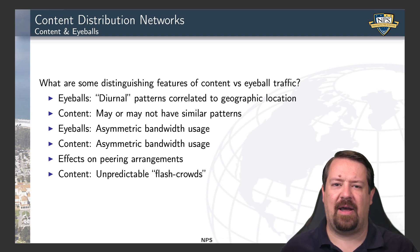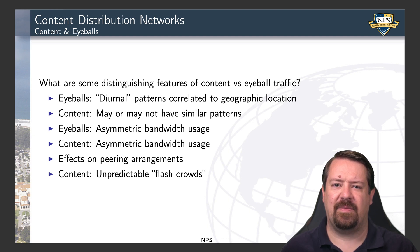For example, eyeball networks tend to have diurnal patterns, meaning the volume of network traffic changes over the course of the day. In general, eyeball traffic is very low during the early morning hours and picks up over the course of the day, peaking sometime in the evening. Content may have this sort of pattern if it caters to users in a particular geographic area, but other content is delivered to eyeballs worldwide, so the diurnal pattern wouldn't be observed on the content delivery side.